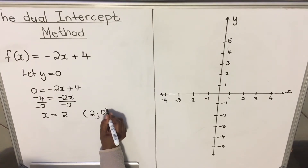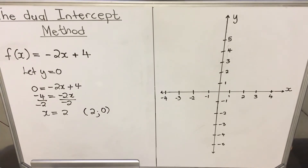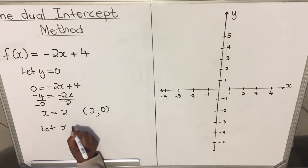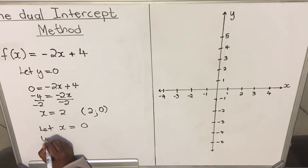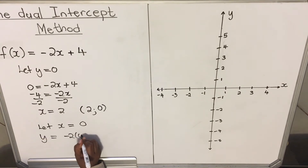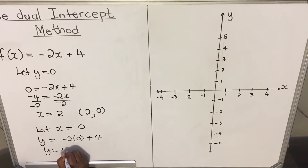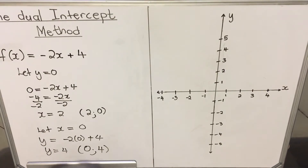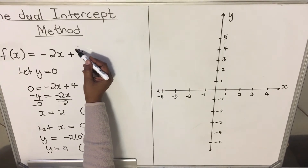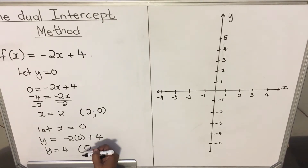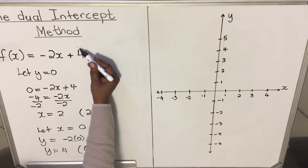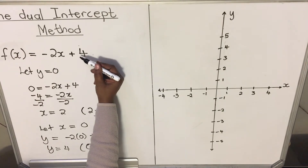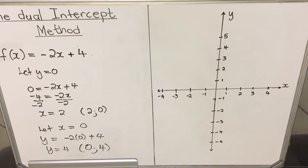For our y-intercept, we let x equal zero: y = -2(0) + 4, so y equals 4. When x is zero, our coordinate is (0, 4). You remember from the equation that c is the y-intercept — you don't necessarily have to calculate it. That number standing alone without an x is your y-intercept.